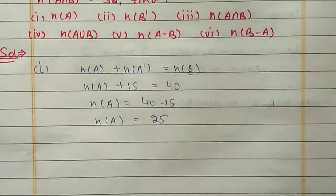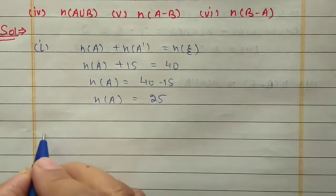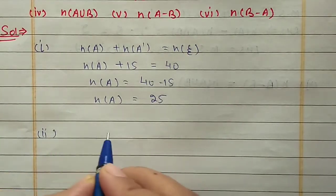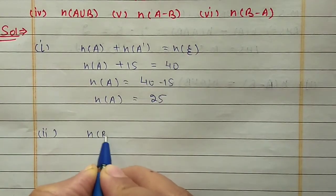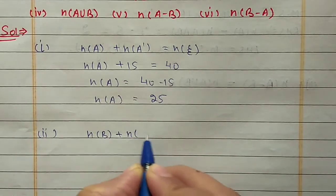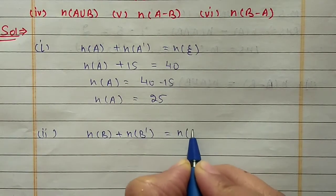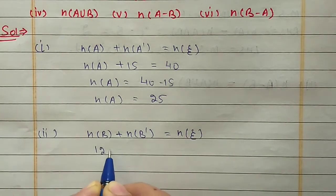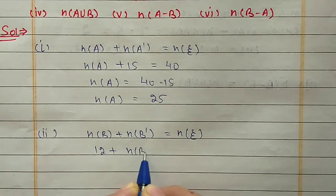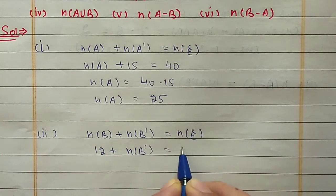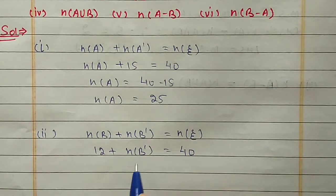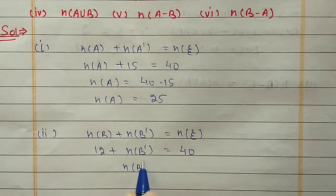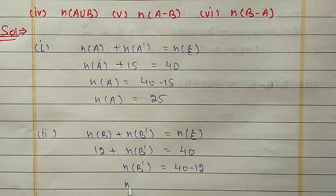For the second part, N(B'): using the same property N(B) + N(B') = N(U). N(B) is 12 and N(U) is 40, so N(B') = 40 - 12 = 28.